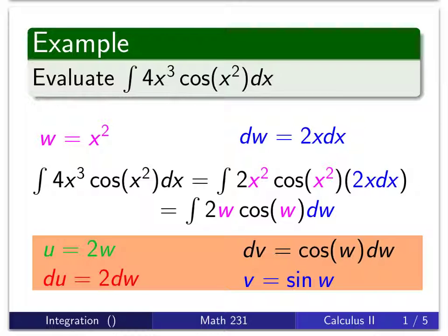We'll let u be the factor inside the integrand that's in the way, which in our case is the 2w. So du is 2 dw. dv is everything else. We need to find a function whose derivative is the cosine of w, and that function would be the sine of w.